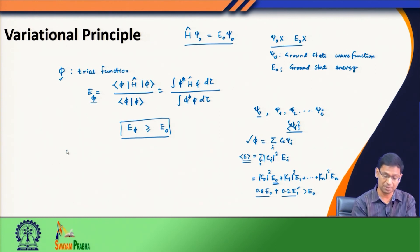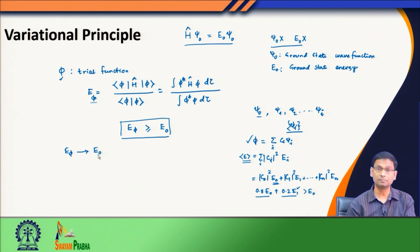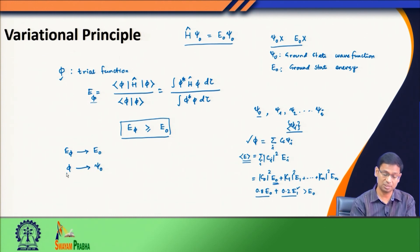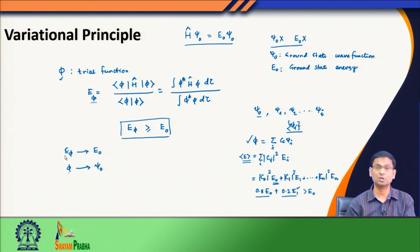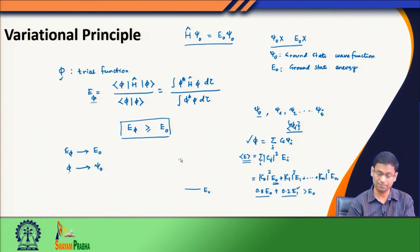In other words, E_φ will in most cases be greater than E₀, but when it approaches E₀ this can happen only when φ approaches ψ₀. This is my trial wavefunction and that is the true wavefunction. From the variational principle I have a recipe: suppose this is my true exact energy that I still do not know, but variational principle tells me — make a guess, make a trial function, and evaluate E_φ from your trial function. E_φ is always going to be greater than E₀, so it will always be above E₀.